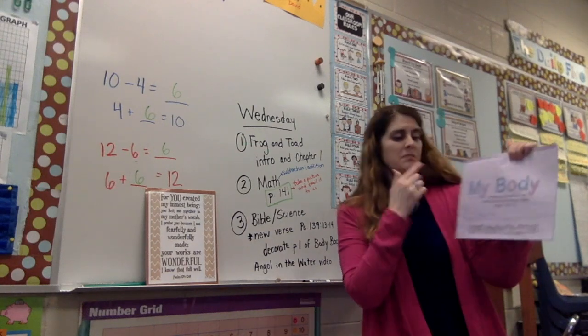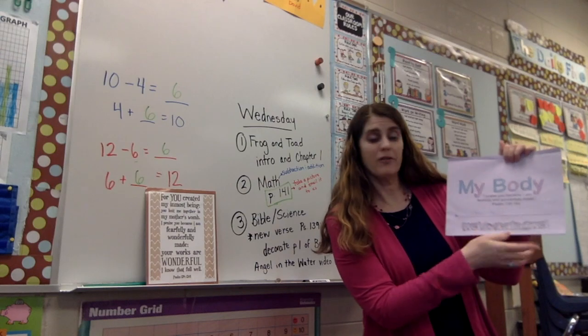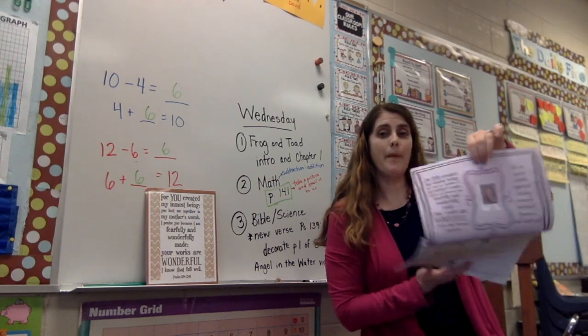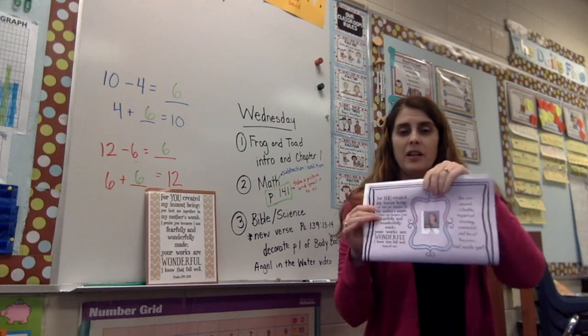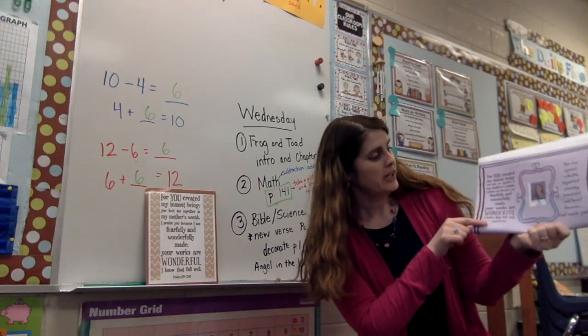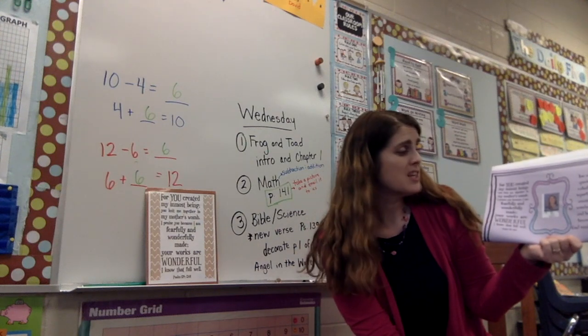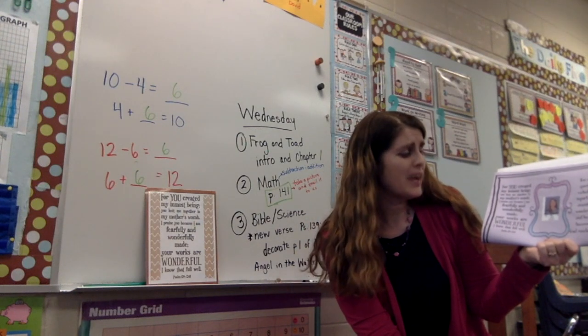Now if you get out your body book, it's purple. I colored mine on the front, you may do that too. It says I praise you because I am fearfully and wonderfully made. It has part of our verse here. And then if you open it up you're going to see a part that looks like this and it has a whole verse written on it too right here.